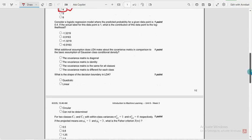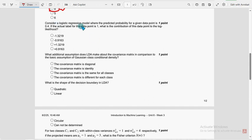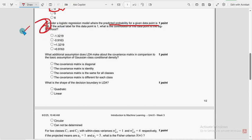Moving on to the fifth question. I want to zoom this for your better visibility. The predicted probability of a given data point is 0.4. The actual level for this data point is 1. What is the contribution of this data point to the log likelihood? For fifth question, second option is the probable solution, minus 0.9163.